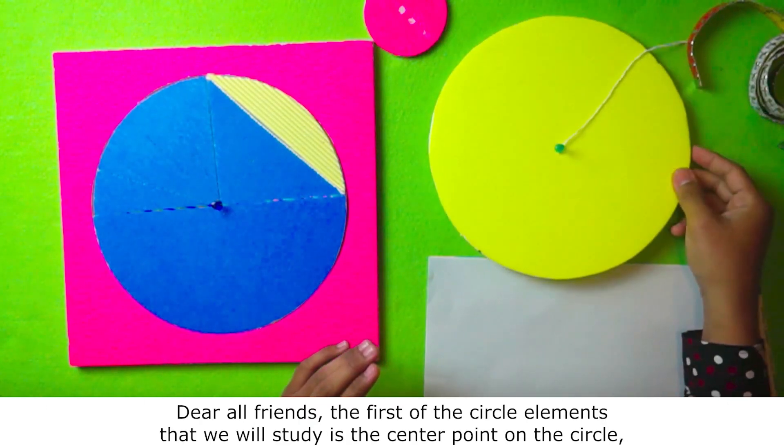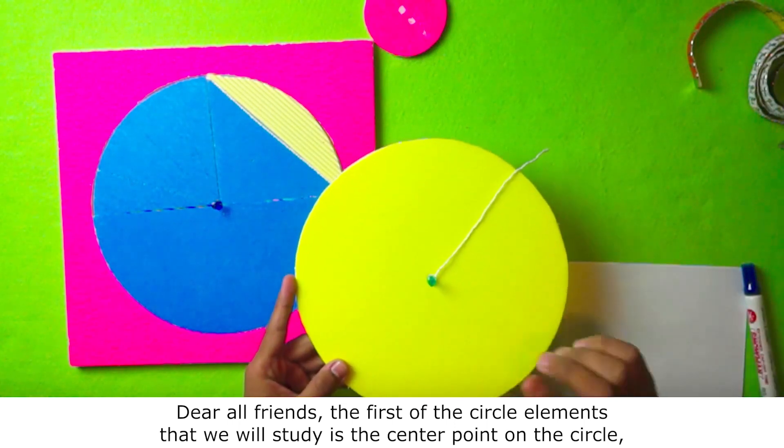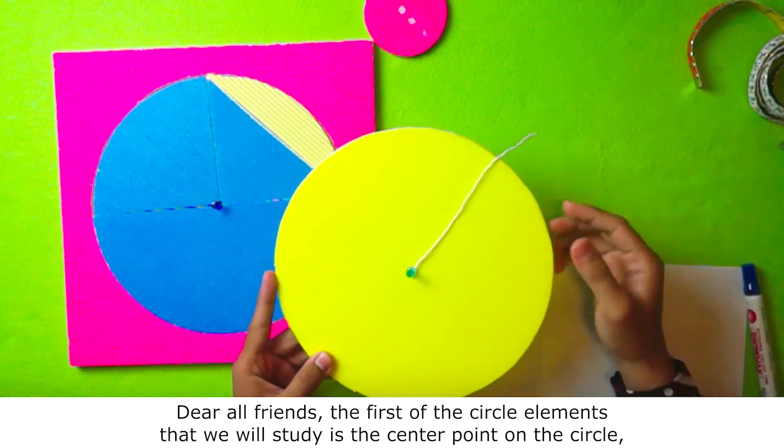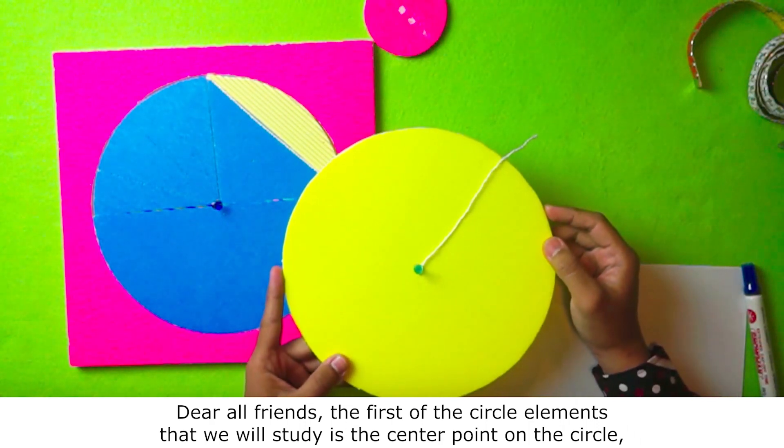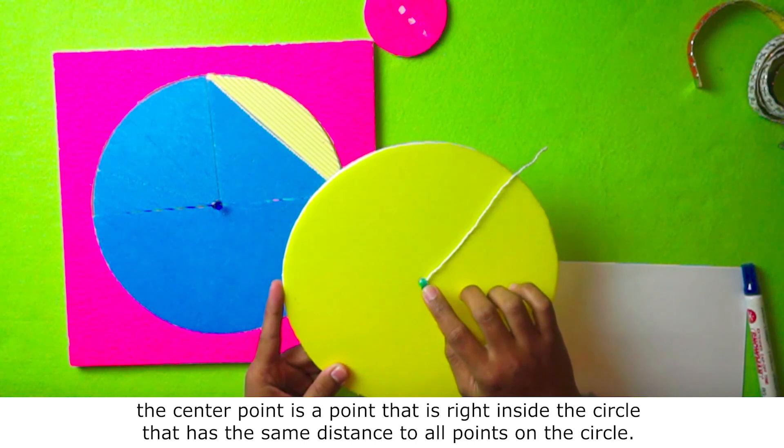Dear old friends, the first of the circle elements that we will study is the center point on the circle. The center point is a point that is right inside the circle that has the same distance to all points on the circle.